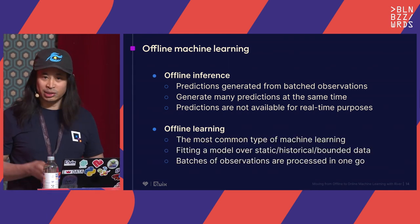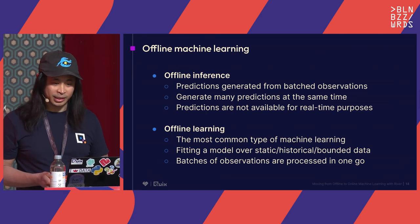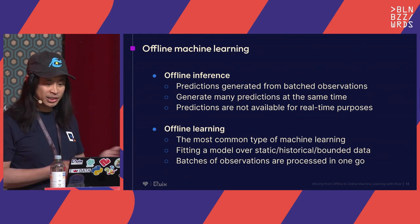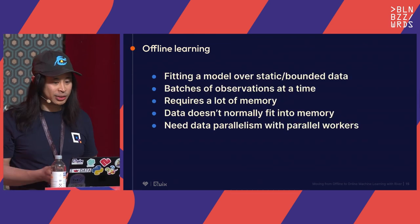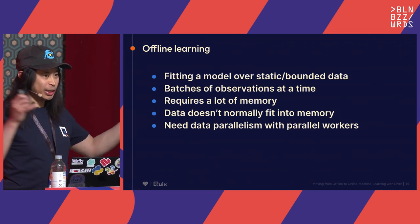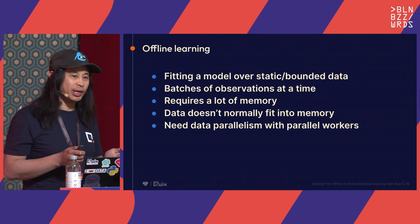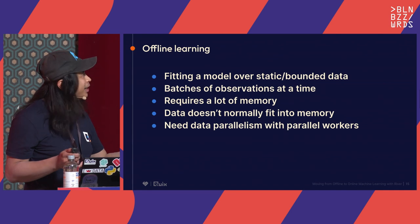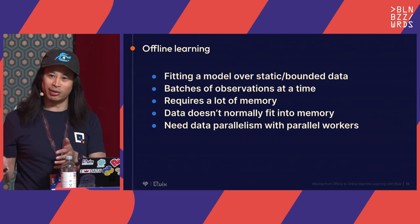Offline learning is the most common type — probably the type you're most familiar with. It's when you fit a model over static, also known as historic or bounded data. You've got batches of observations all processed at once. It requires a lot of memory because you usually have a lot of historical data to train your model on. It doesn't always fit into memory, which is why tools like Spark exist — they allow you to partition the data, break it into chunks, and compute everything through parallel workers.